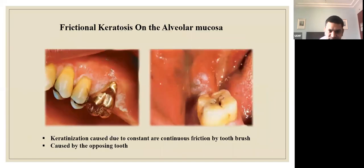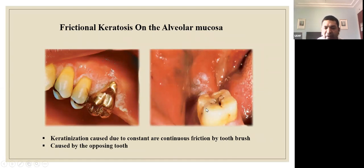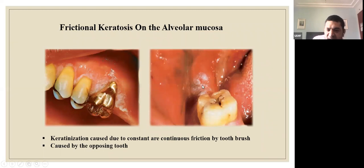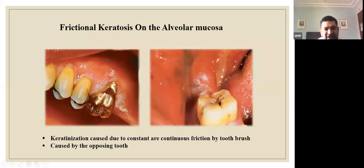Frictional keratosis occurs in areas of continuous friction, such as the retromolar area where an upper molar impinges on the mucosa. It also results from continuous toothbrush trauma — the entire area becomes completely white due to keratinization. Even food products rubbing against the mucosal surface during chewing can cause enough friction to produce keratinization.